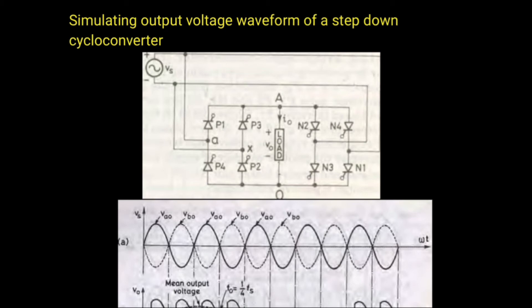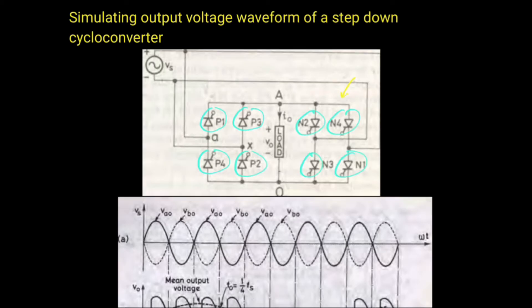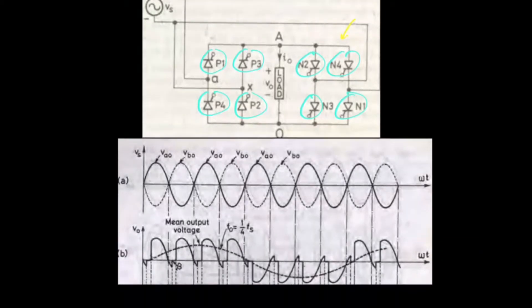Simulating output voltage waveforms of a step-down cycloconverter. The circuit diagram for a step-down cycloconverter has 8 thyristors: 4 are positive group thyristors and 4 are negative group thyristors. Let's move on to the waveforms.